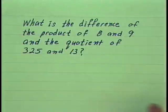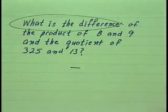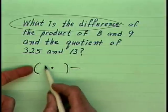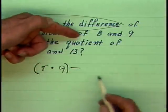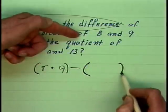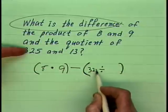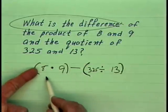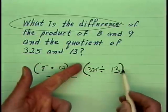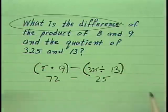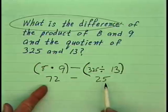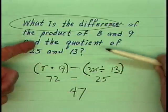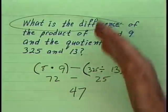One more before our lesson ends. 'What is the difference of the product of 8 and 9, and the quotient of 25 and 13?' 'Difference' is the results of having subtracted. 'Product' means the results of having multiplied 8 and 9. 'Quotient' is the results of having divided 25 and 13. Now the order of operations takes over — doing what's in parentheses first: (8 × 9) = 72 and (25 ÷ 13) ≈ ... working through we get 25, and then finally subtracting these two gives 47. We will review this more in future lessons — you'll see several more in the next lesson.